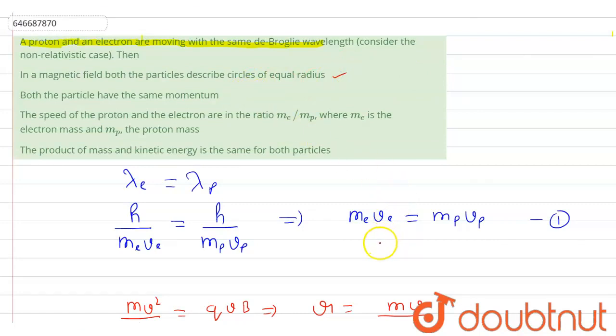Since we already proved that m_e·v_e = m_p·v_p, Option 2 is already correct — the momentum is the same in both cases.